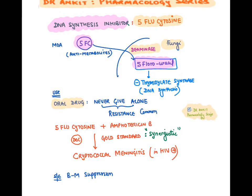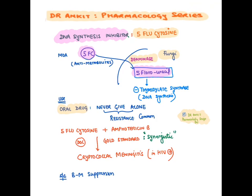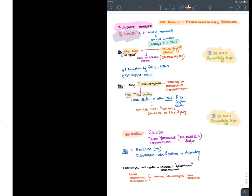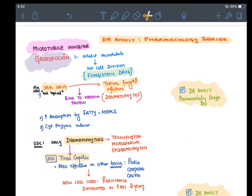5-flucytosine is an oral drug given only with amphotericin B due to synergistic effect — amphotericin B disrupts the fungal cell membrane allowing 5-flucytosine to enter easily. This combination is the drug of choice for cryptococcal meningitis. The side effect is bone marrow suppression.